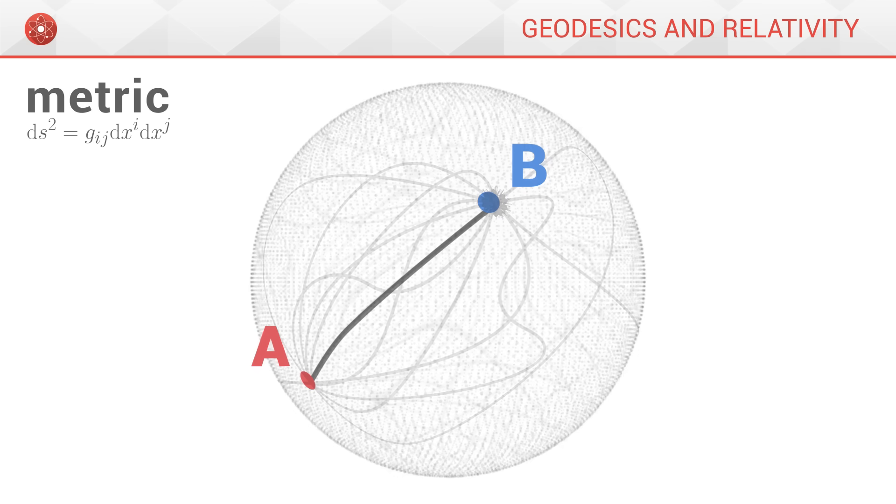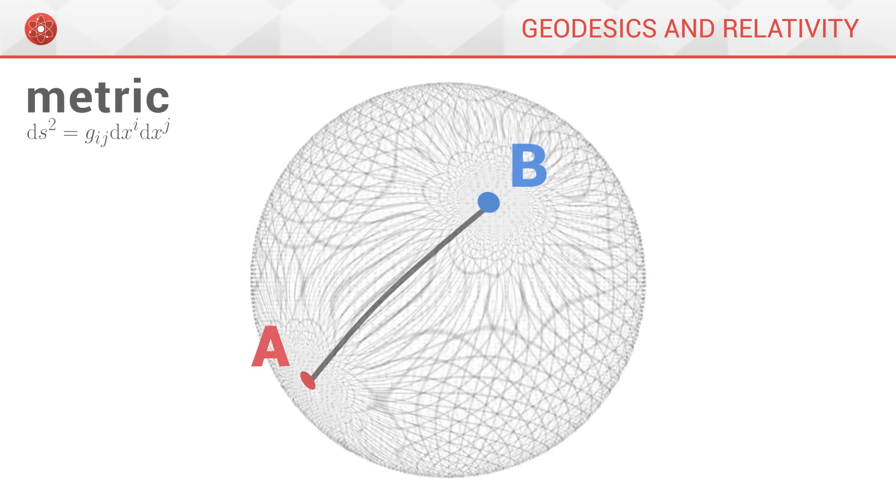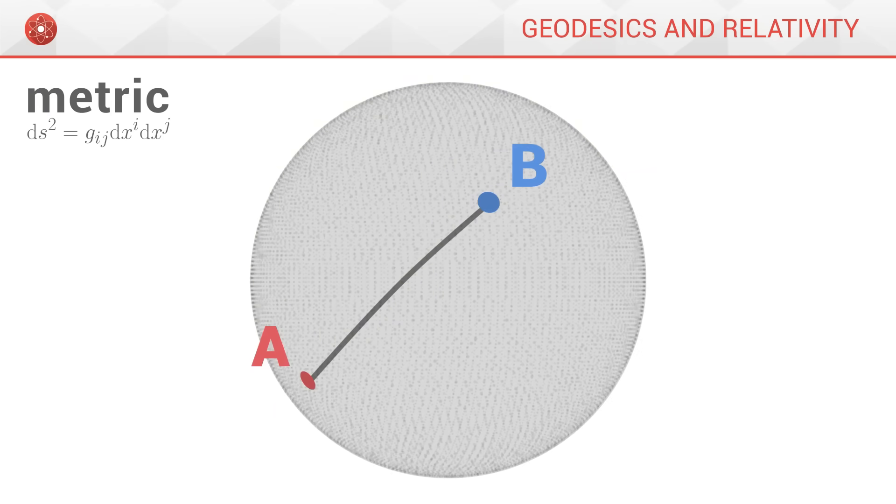If we imagine that we have tested the infinity of possible routes, we are now able to determine the shortest path. The optimal path to get from A to B. This path determines the distance between the two points.